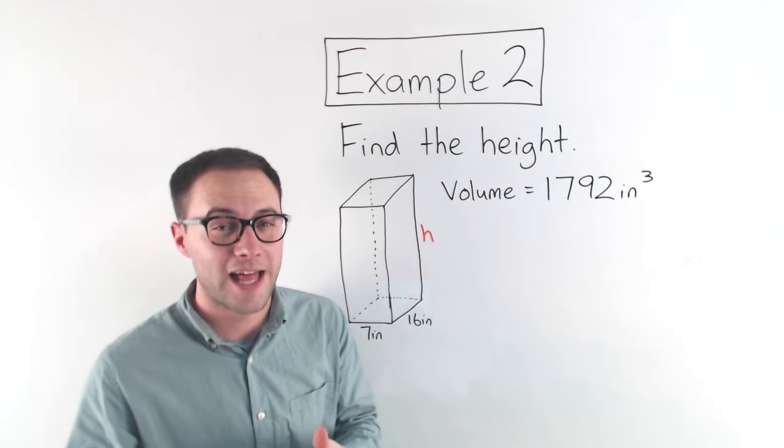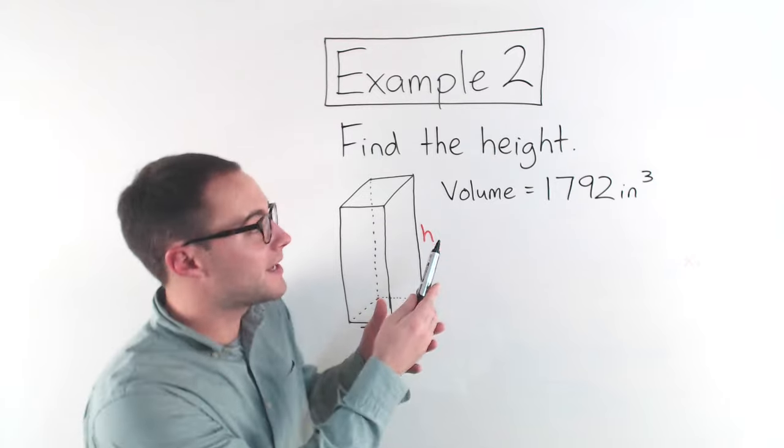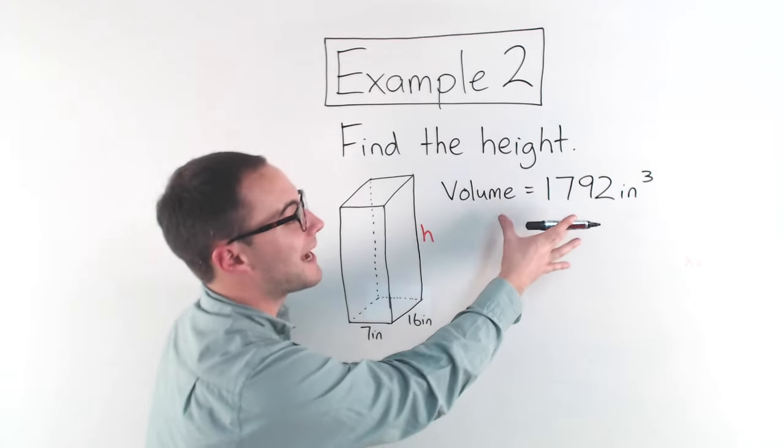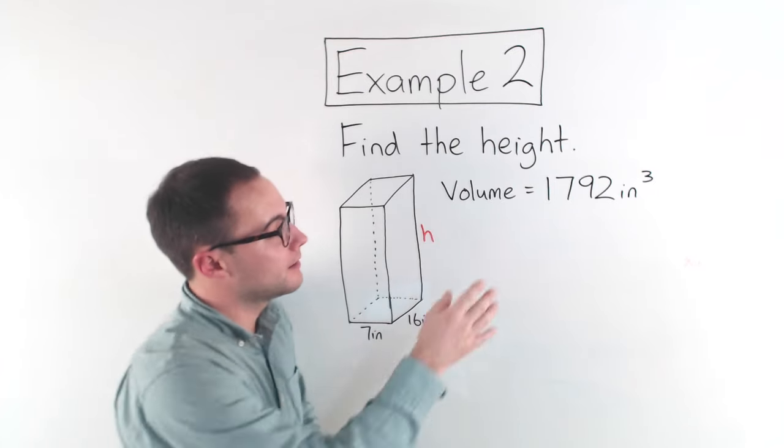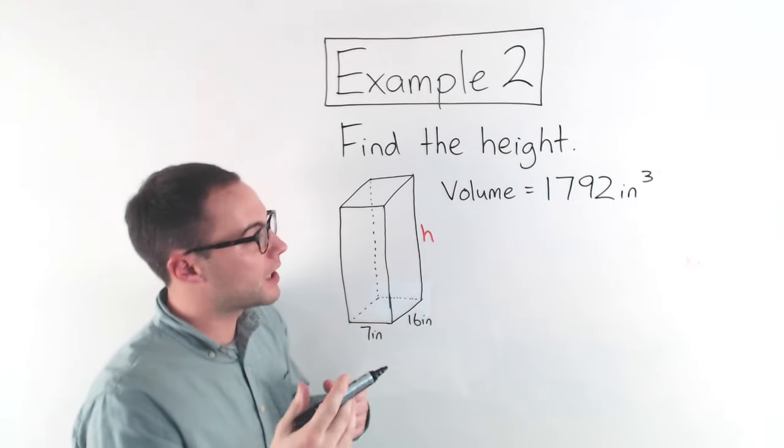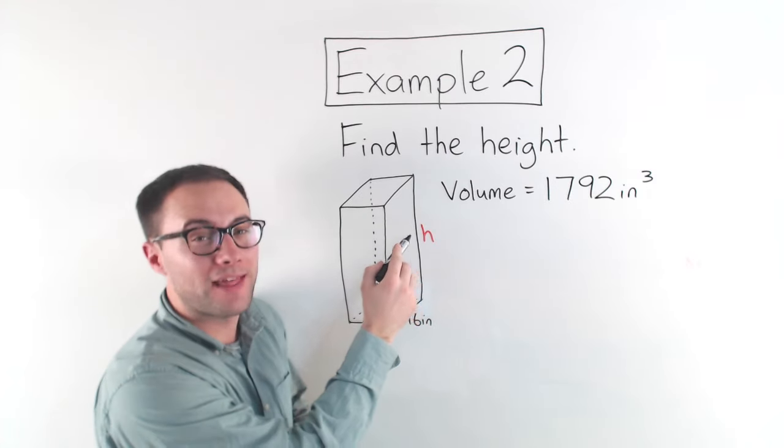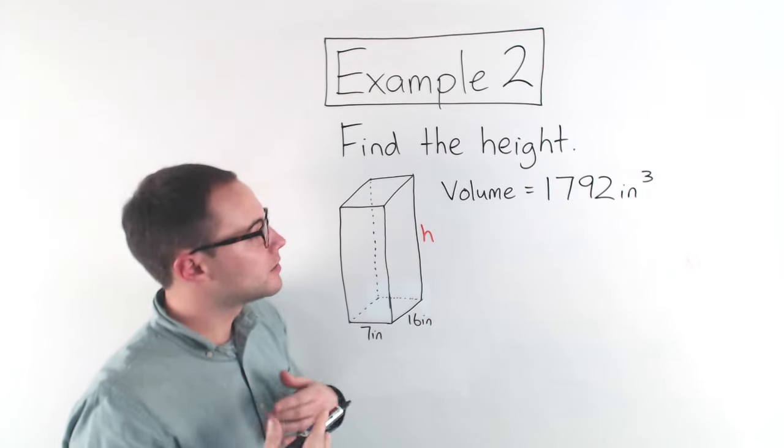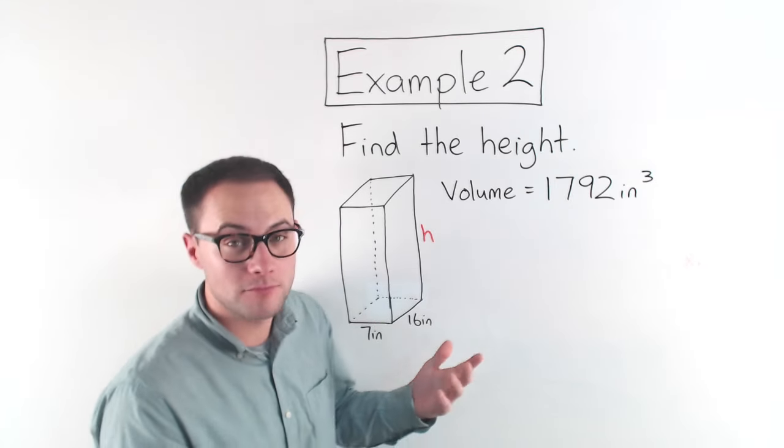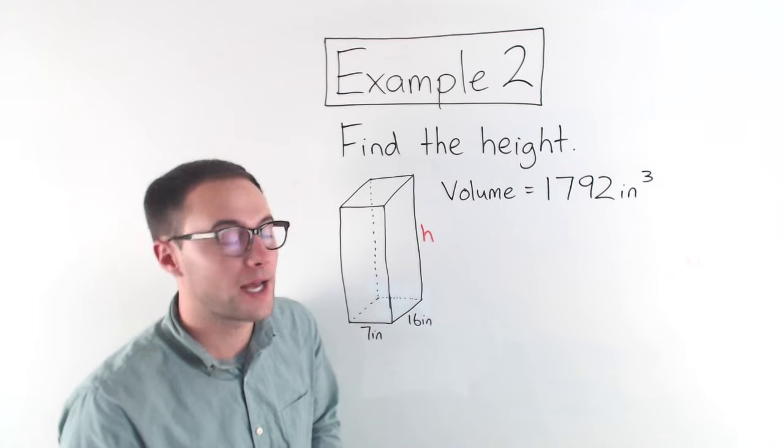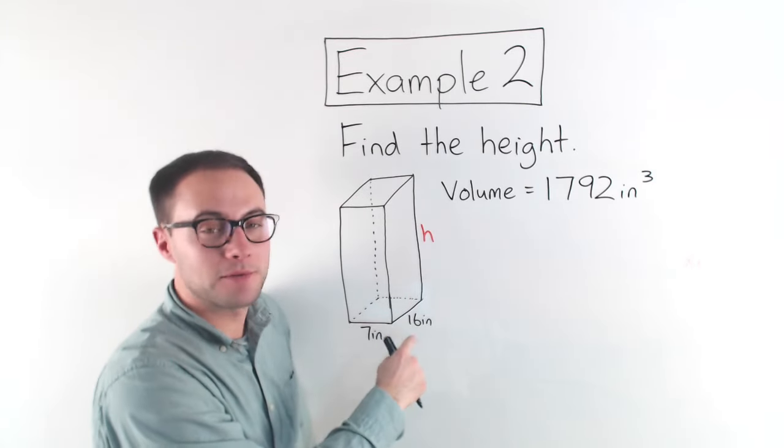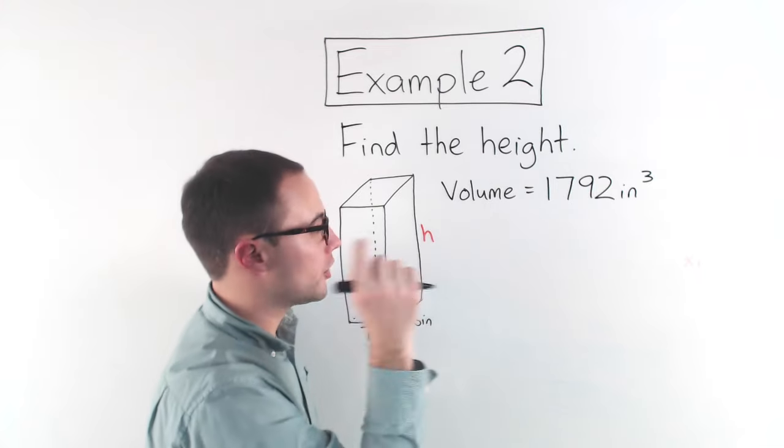All right, here's our last example. Find the height. So they give us a rectangular prism. They tell us the volume already. The volume is 1,792 inches cubed or cubic inches. But they want us to find the height. We don't know the height. So what we're going to do is we're going to set up an equation and solve for h. Solve for height.